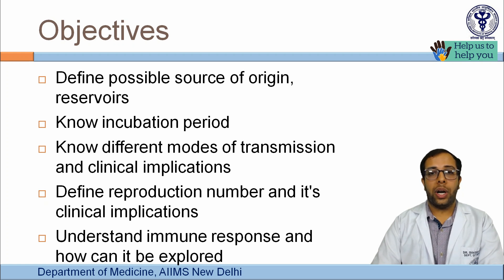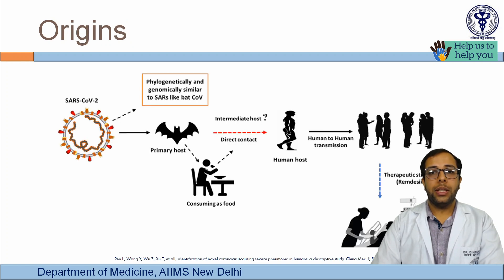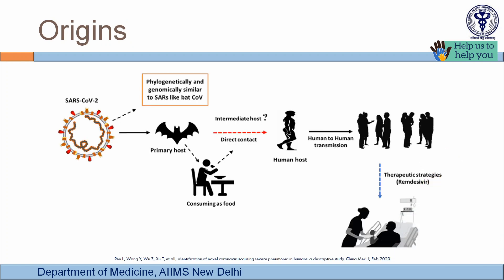Further objectives include: to define the reproduction number and its clinical implications; and to understand how an immune response is mounted against this infection and how it can be explored clinically for the betterment of the population.